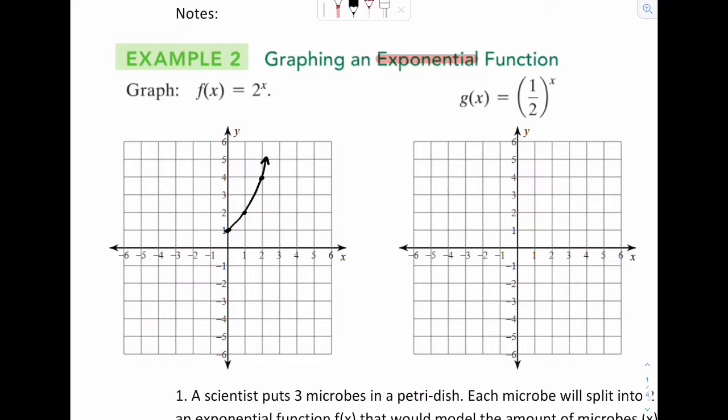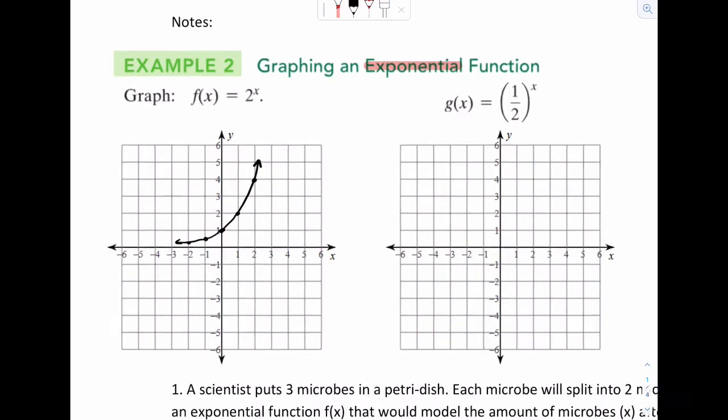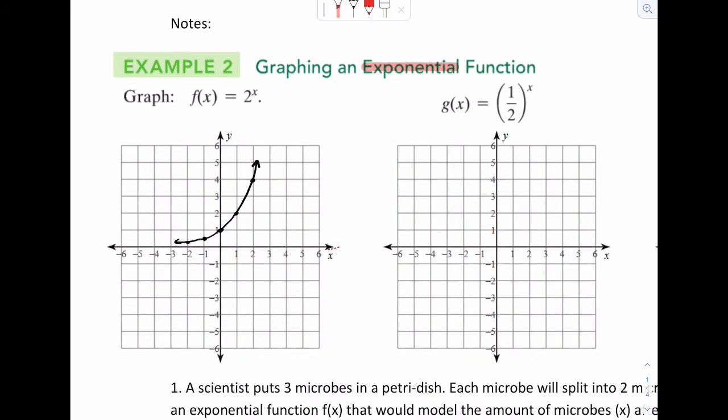The other half is going to go into fractions. So negative 1, 1 half, negative 2 quarter. This thing is going to curve off like that, and there'll be a nice asymptote right there. That would be y equals 0.